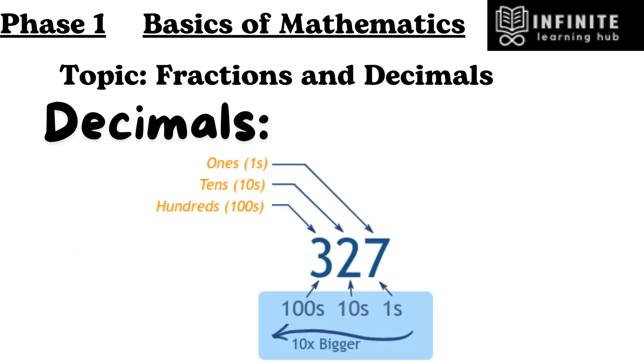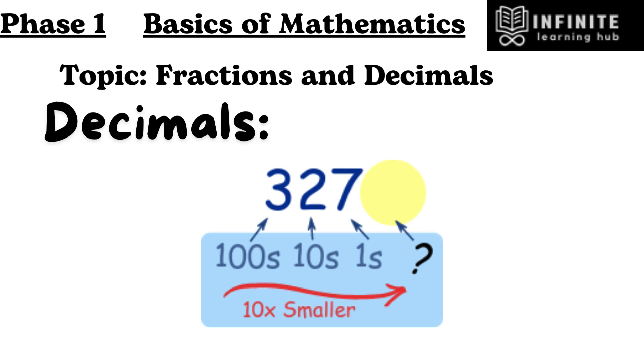As we move left, each position is 10 times bigger. Tens are 10 times bigger than 1's, hundreds are 10 times bigger than 10's. As we move right, each position is 10 times smaller. From 100's to 10's to 1's.